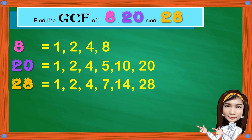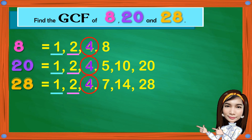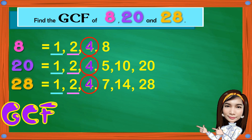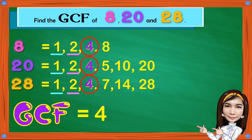Next, underline the common factors. We have 1, 2, and 4. So the greatest common factor of 8, 20, and 28 is 4.